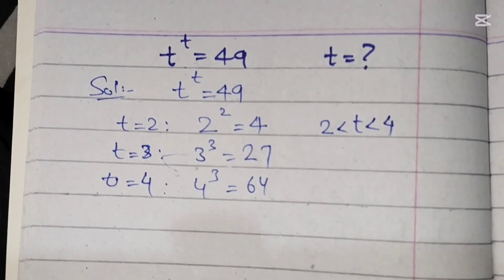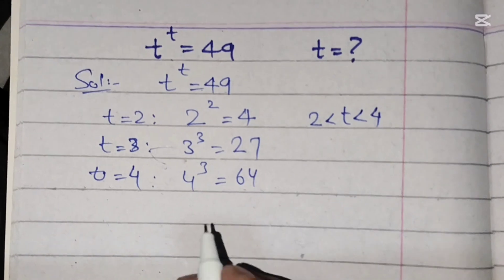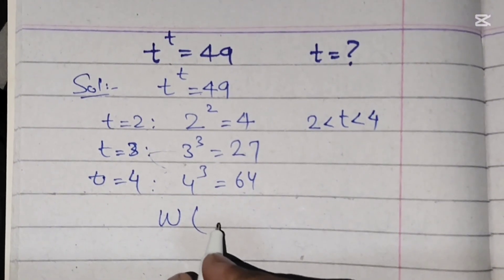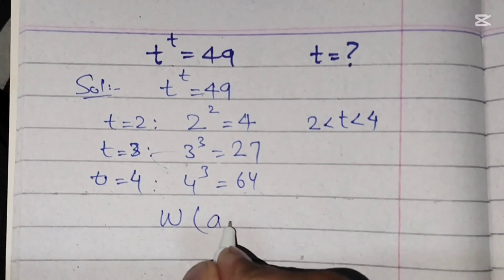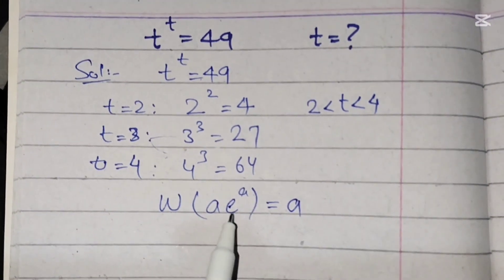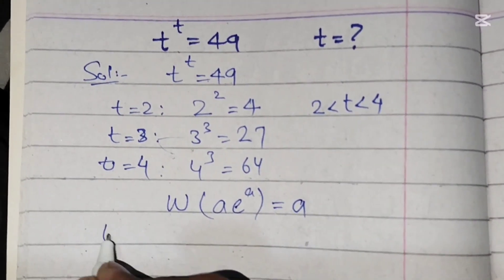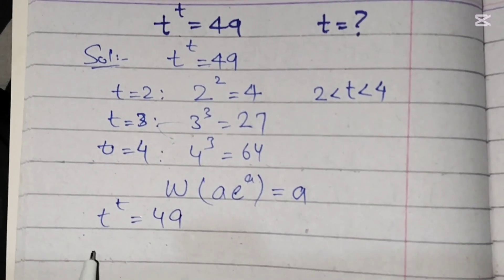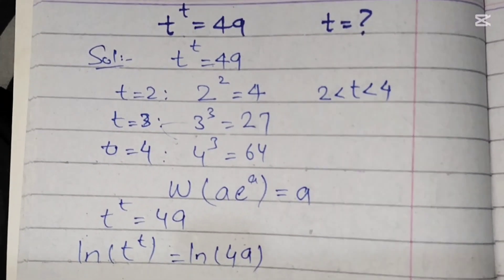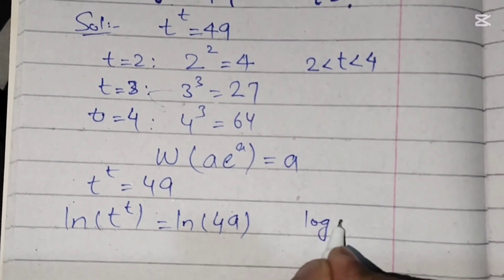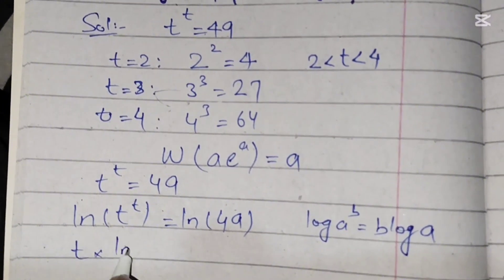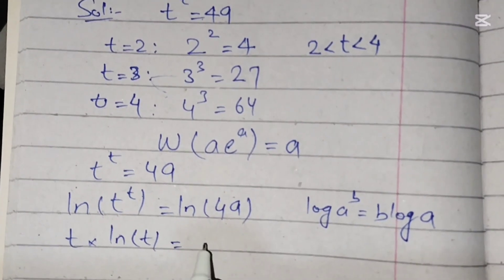We have to find out the value of t. As you know, the Lambert W function is basically the inverse of the function a^a. So we take t^t = 49 and apply natural log on both sides. Using log(a^b) = b·log(a), this gives us t·ln(t) = ln(49).